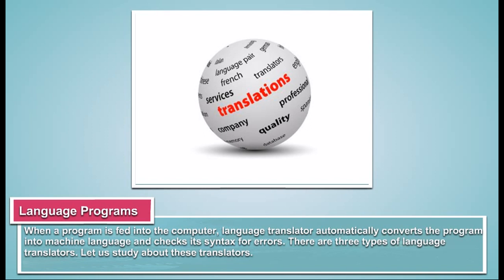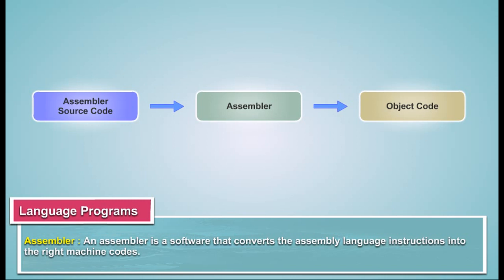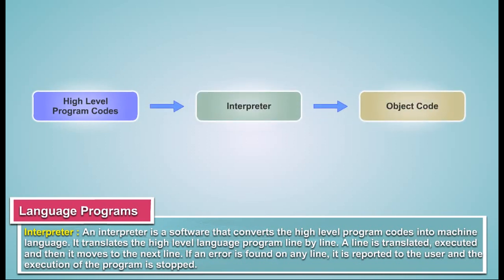Assembler: An assembler is a software that converts the assembly language instructions into the right machine codes. Interpreter: An interpreter is a software that converts high-level program codes into machine language. It translates the high-level language program line by line. A line is translated, executed, and then it moves to the next line. If an error is found on any line, it is reported to the user and the execution of the program is stopped.